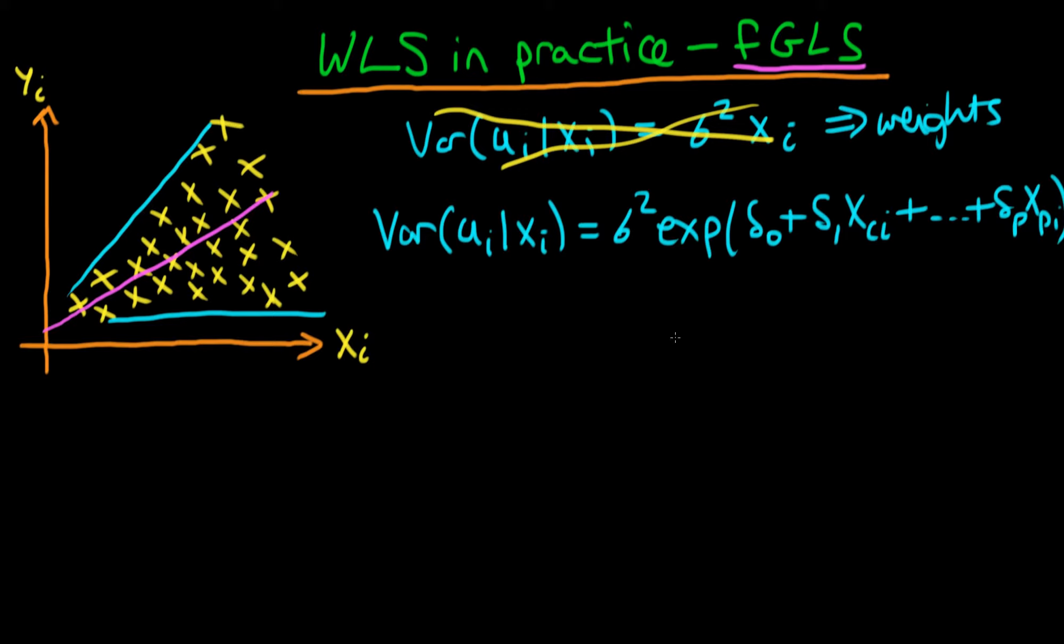Why have we used a different form of the variance to that which we specified initially? Because this top model is a linear model, whereas the bottom one, because it's got the exponent, is actually an exponential model.